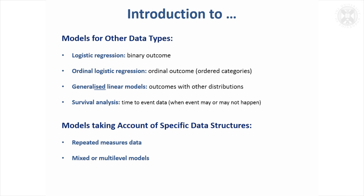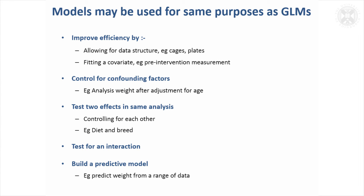All the things we did for general linear models can be reproduced using these models for data with other types of distributions. We can fit several effects to improve efficiency, adjust for confounding factors, address two effects in the same analysis, test for an interaction, and use the model to try and predict things. So all of this is possible in the types of models I've been looking at.